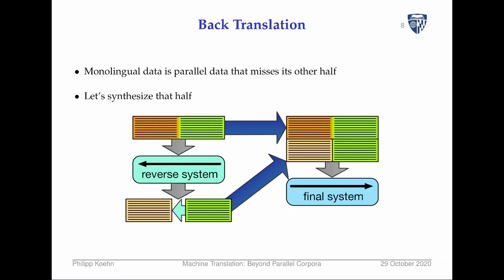The process starts with building a reverse system that translates from the target language to the source language using the parallel corpus. We then use that to translate monolingual data in the target language into the source language, giving us additional synthetic parallel data. When combined with the original parallel data, what's indicated is that the target side is always proper text in the target language — the system only learns to predict valid text in the target language.